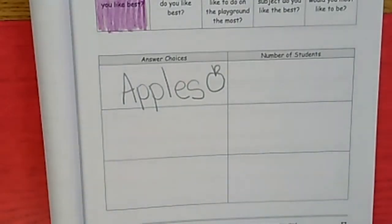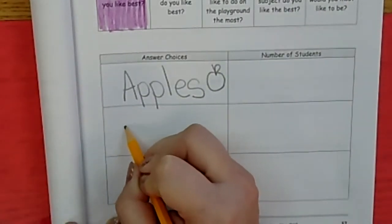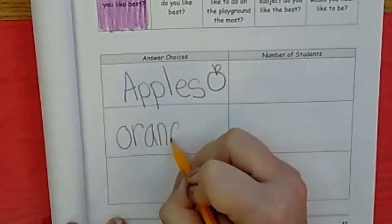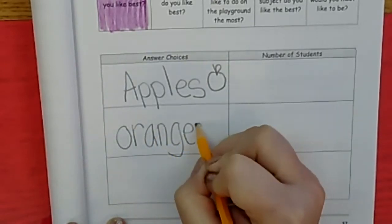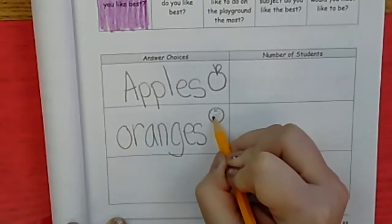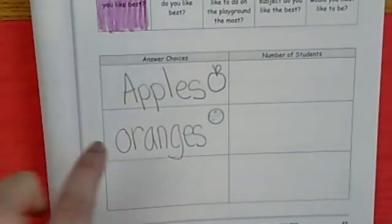My other one that I asked, I said, do you like oranges best? So oranges is like just like the color, O-R-A-N-G-E-S. And I write oranges. And I'll draw a little picture. This is the outside of the orange that has like texture on it. So apples, oranges.